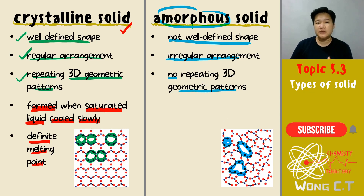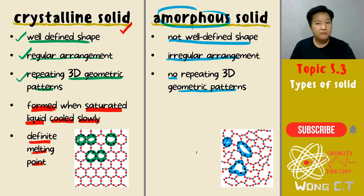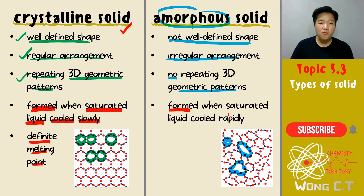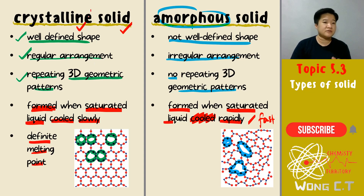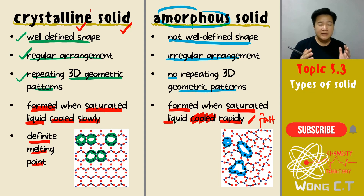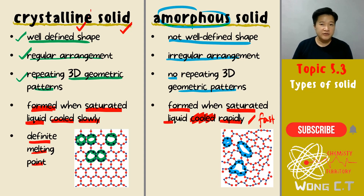You will have a very irregular arrangement in the amorphous solid and the geometry will not be repeated. This solid is formed when your saturated liquid is cooled very rapidly — very fast. So with the same saturated liquid: cool it extremely slow and steady, you form crystalline solid; cool it rapidly at a very fast pace, you will have an irregular arrangement and a not-well-defined shape — your amorphous solid.